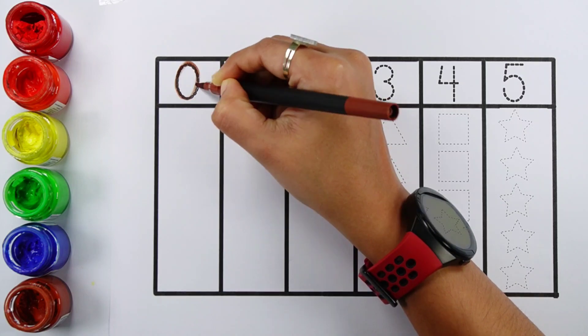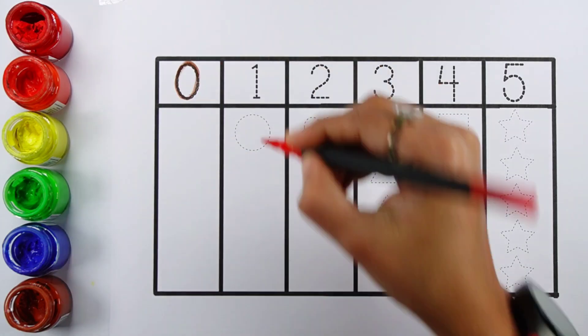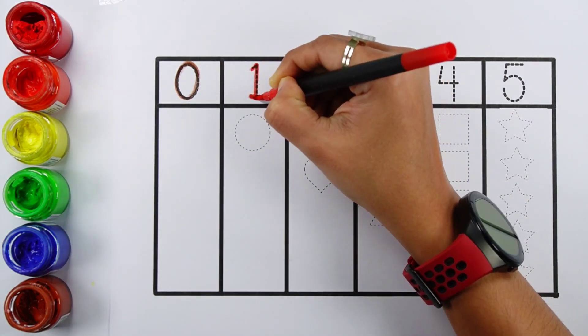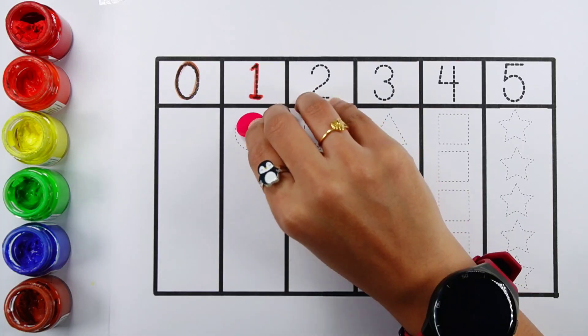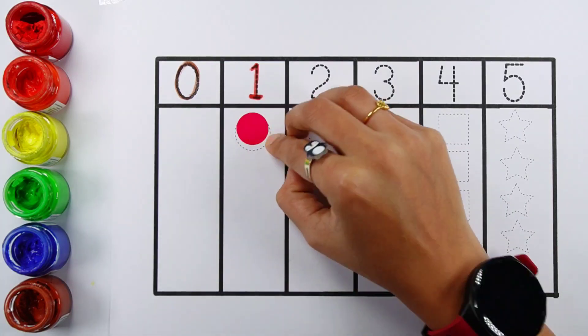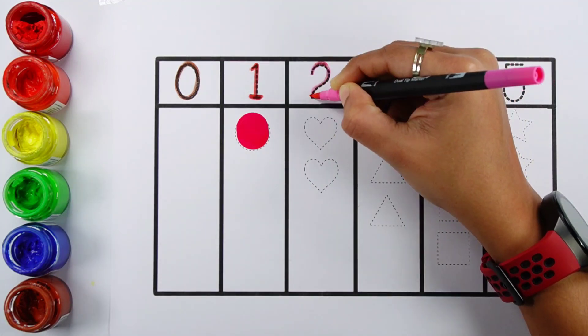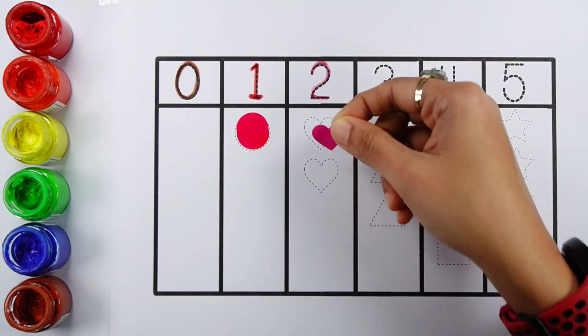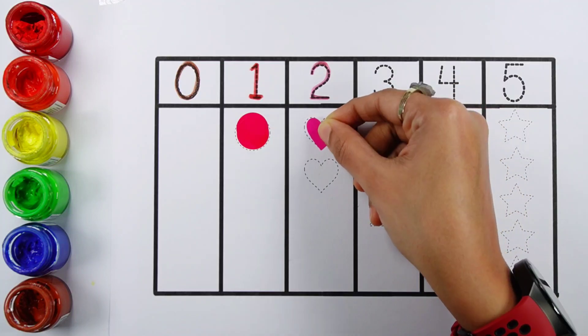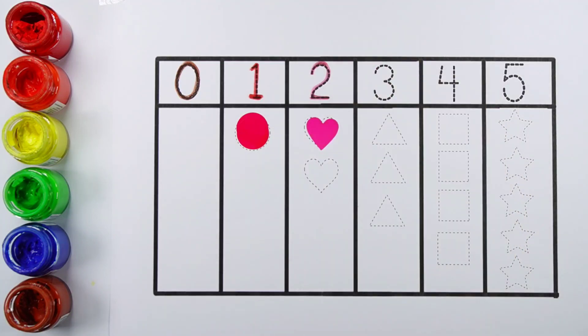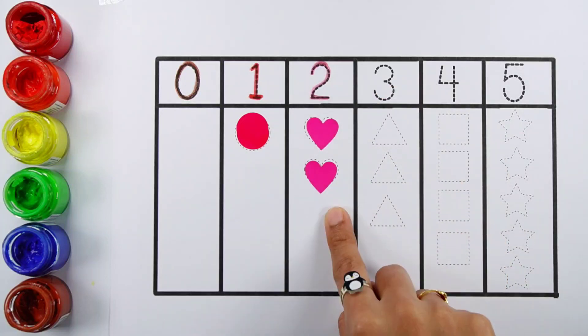Zero. Zero shapes. 1. 1 circle. 2. 1, 2. 2 hearts.